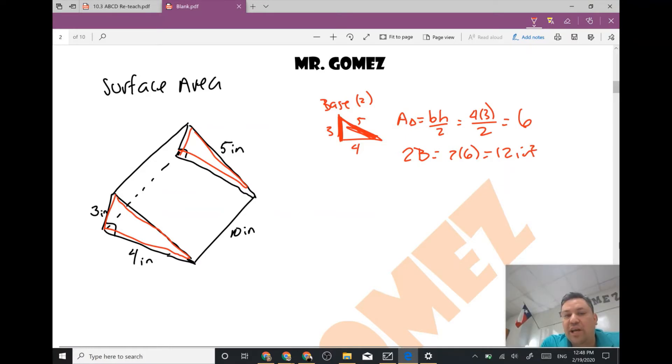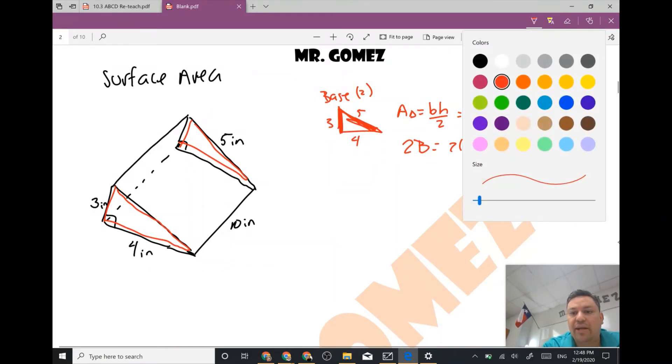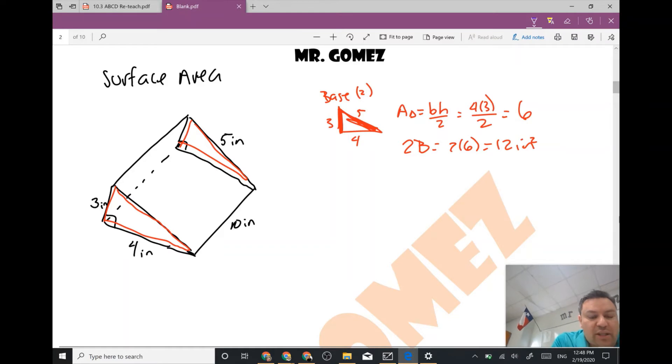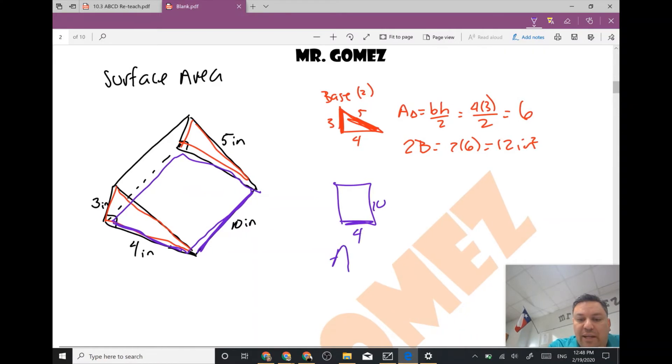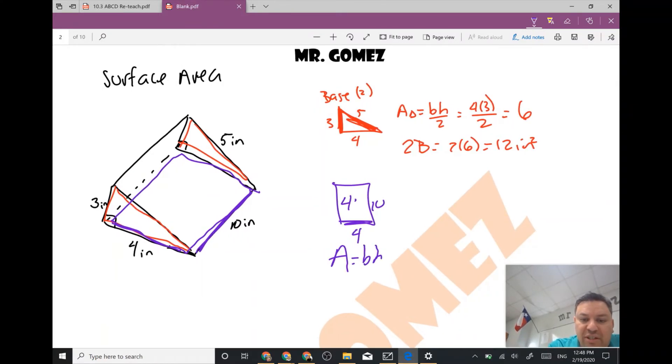Now that's for the area of the bases. Now for the rectangles we're going to have to identify the rectangles that we have. So one that we have is the one on the bottom, like if this is a ramp this will be at the bottom and I'm going to draw it on the side. I know it's 10 inches tall and it's 4 inches wide right here on the bottom. To find the area for a rectangle it's just base times height which is 4 times 10 which is 40.